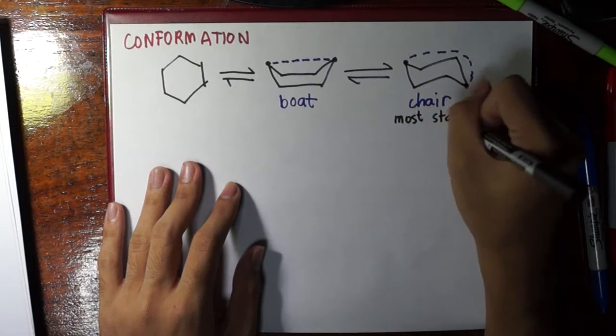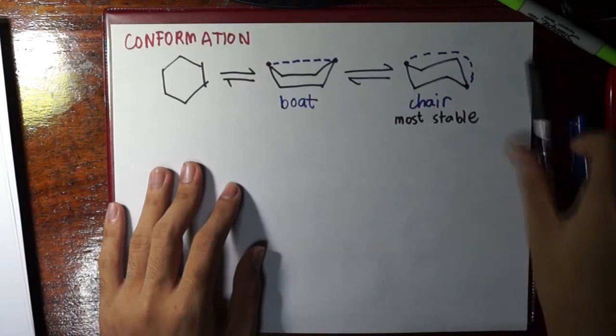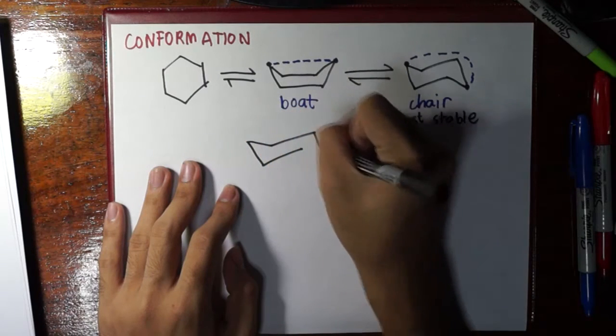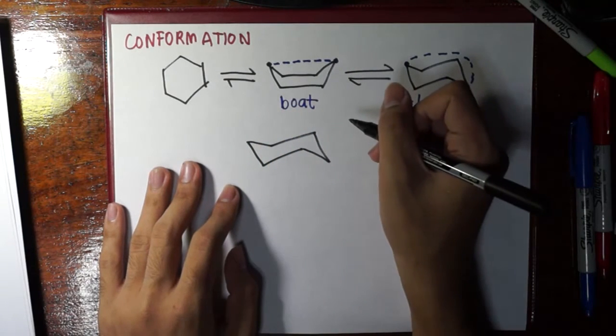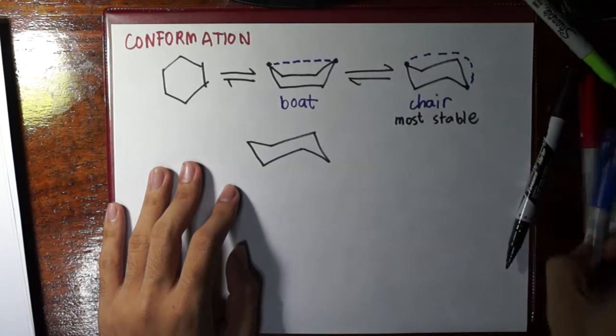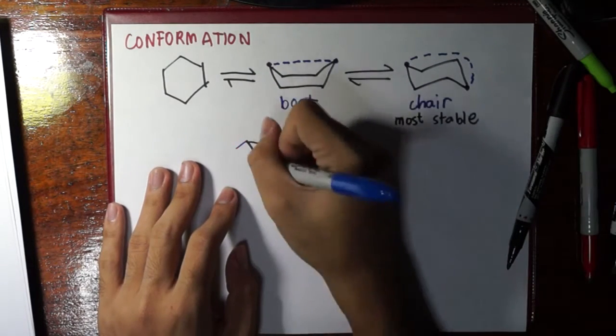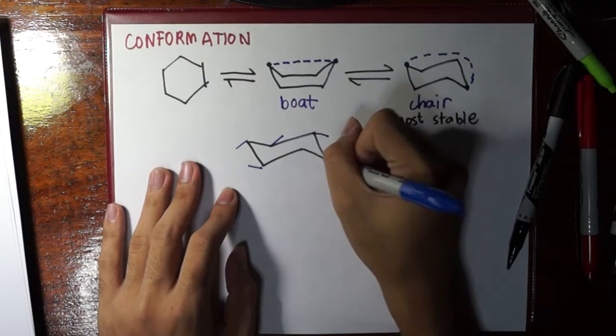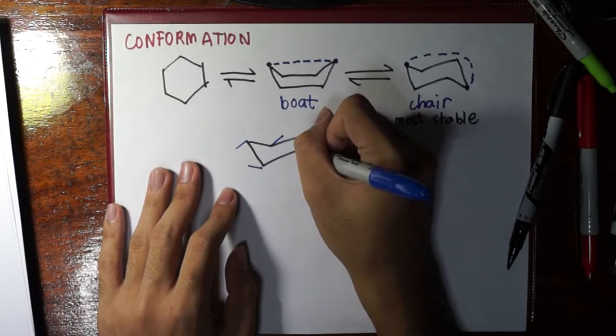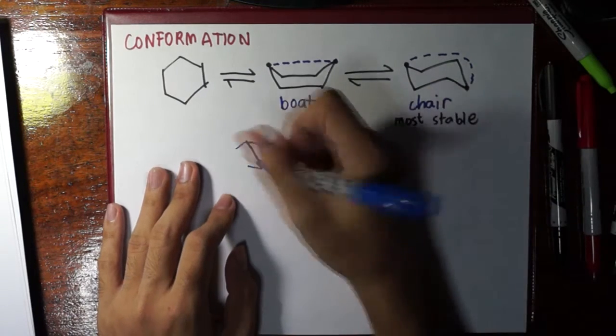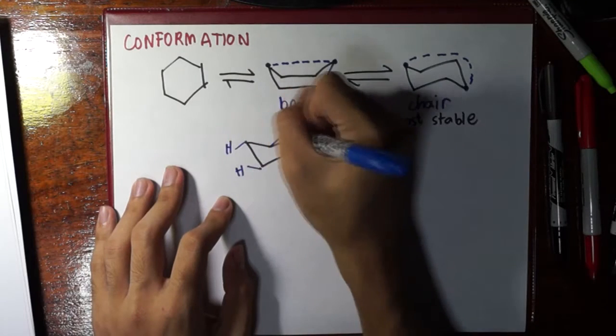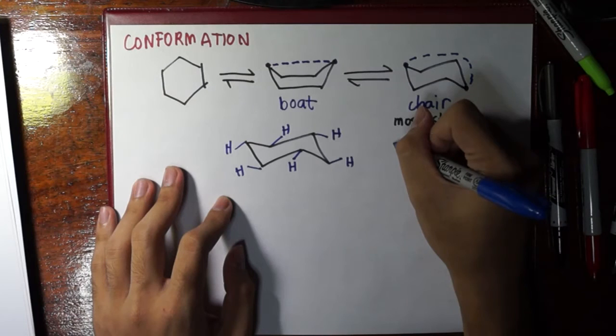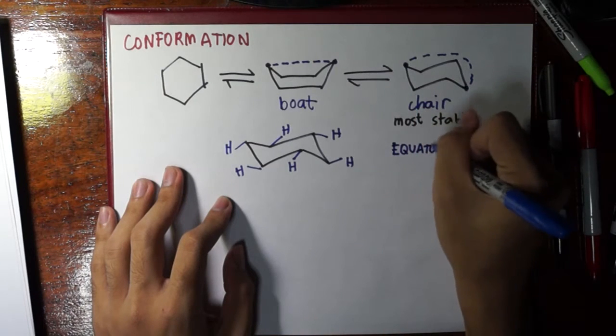All right, and in the chair conformation, we actually have names for the bonds. So let's use blue for the first type of bonds. These are actually the bonds, let's just fill this with hydrogens.